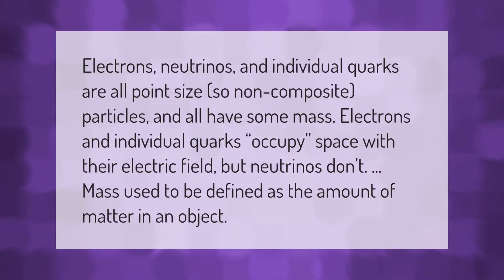Electrons, neutrinos, and individual quarks are all point-size, so non-composite particles, and all have some mass. Electrons and individual quarks occupy space with their electric field, but neutrinos don't. Mass used to be defined as the amount of matter in an object.